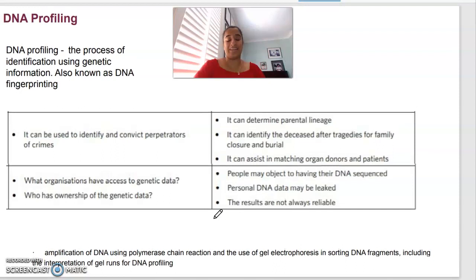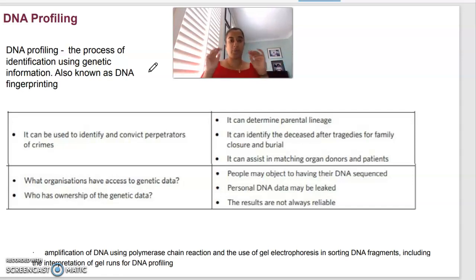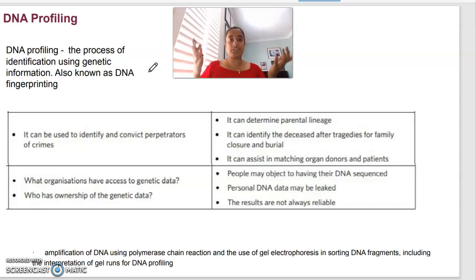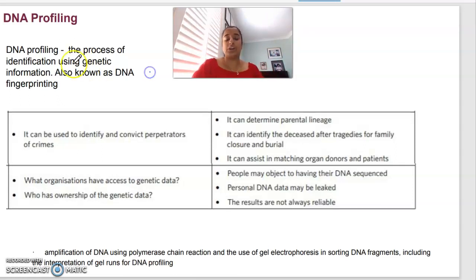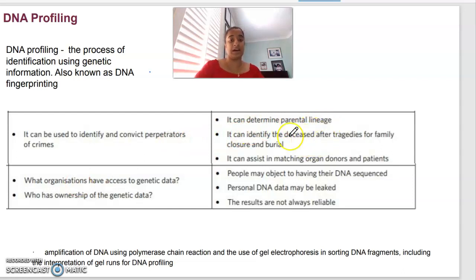DNA profiling is the process of identifying using genetic information — comparing DNA profiles of different people to find commonalities, such as whether a person was at a crime scene, paternity testing, adoptions, or identifying deceased individuals. Also known as DNA fingerprinting, it can identify and convict perpetrators of crimes, determine parental lineage, identify deceased individuals after tragedies, and match organ donors and patients.